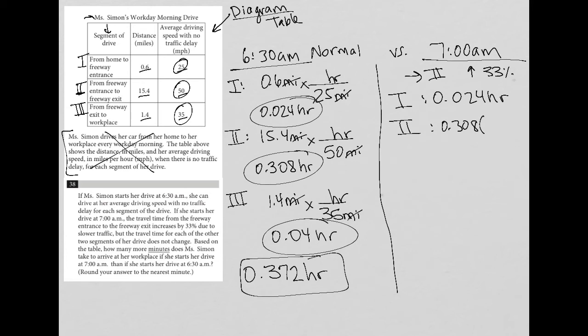As a decimal, that's 1.33. So 0.308 times 1.33 equals 0.40964, meaning a 33% increase takes us from 0.308 to 0.40964 hours.